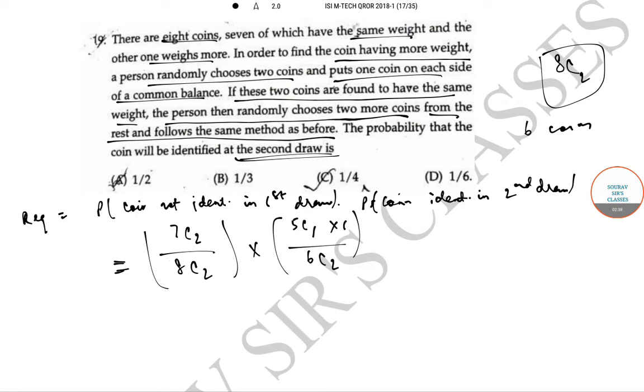Now, solving this you will get 7c2 by 8c2 to be 3 by 4 and 5c1 by 6c2 to be 1 by 3. So, 3 by 4 into 1 by 3 gives us 1 by 4 that is option c. So, option c is the correct answer.